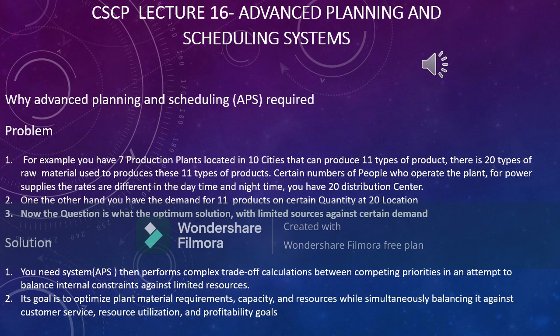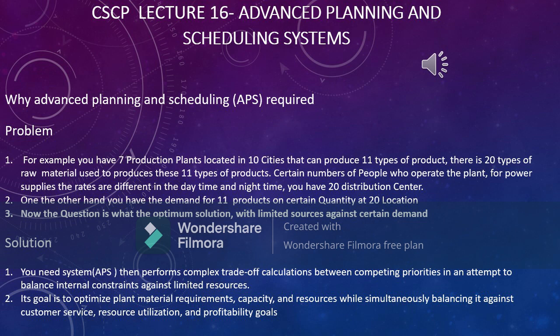You need an APS system that performs complex trade-off calculations between competing priorities, in an attempt to balance internal constraints against resources. You need to get the optimum benefit from these constraints — limited resources, competing demands, competing tasks. You may have to produce products A, B, C, D with hundreds of suppliers. At this point you need this software to solve these complex problems.